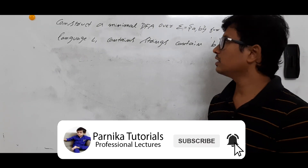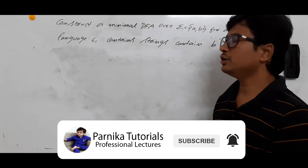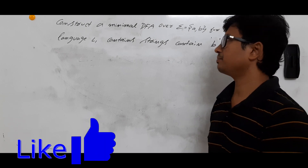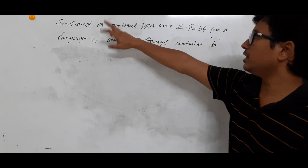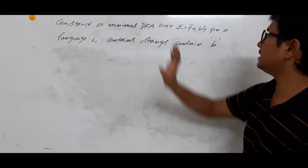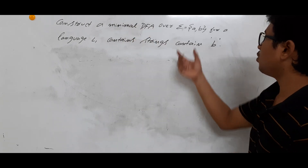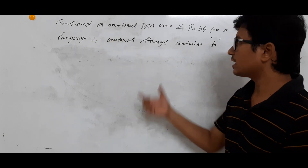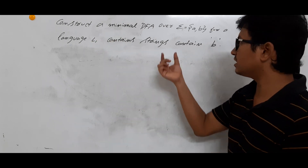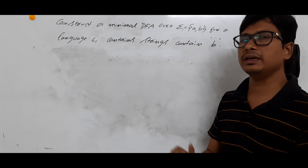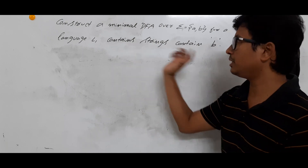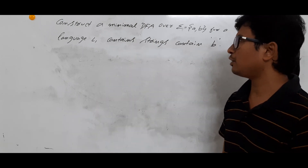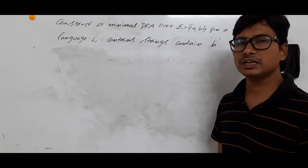Good morning friends. In this video we will discuss another example for constructing a minimal DFA. The question is: construct a minimal DFA for alphabet {a, b} where language L1 contains strings where each string contains the alphabet b.